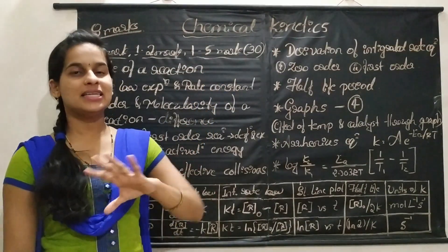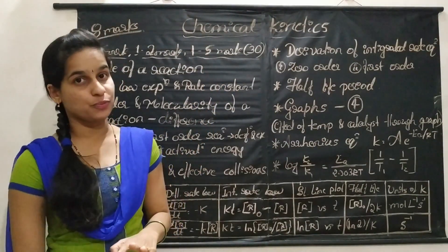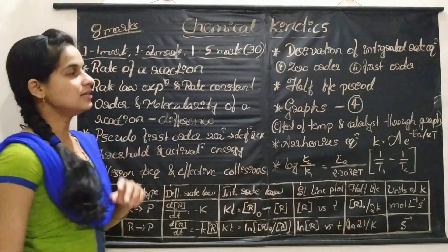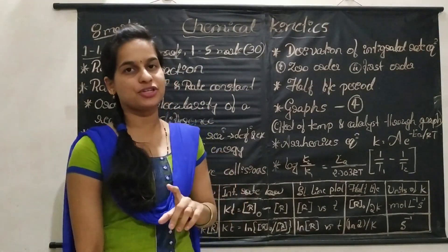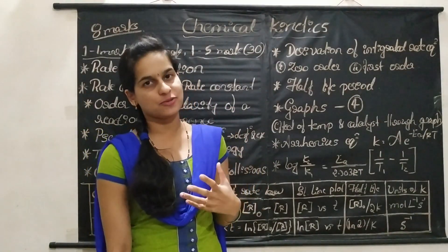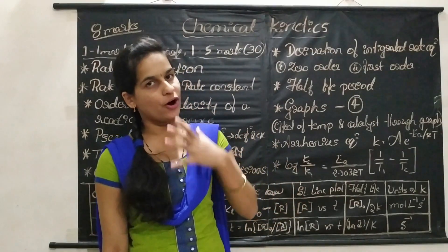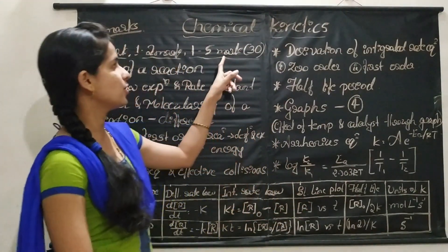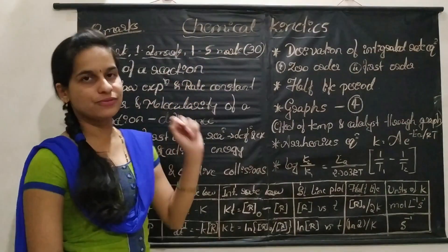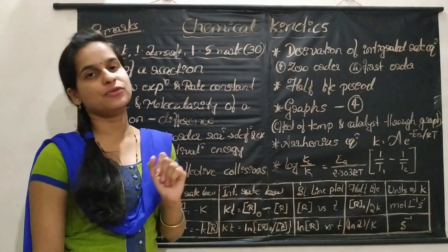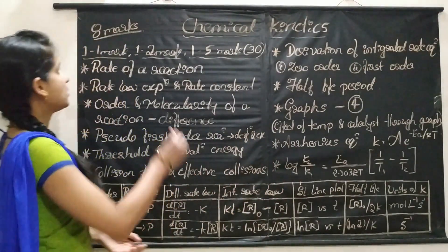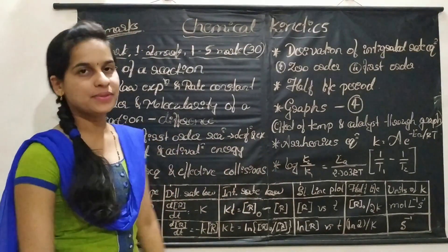In case of the 5-mark question, it is divided as 3 plus 2. Generally, one derivation is asked — it is about the derivation of the integrated rate expression for first order or zero order reaction. So here, one 1-mark question, one 2-mark question, and one 5-mark question — the 13th question in your question paper will be from the Chemical Kinetics chapter, totalling 8 marks.